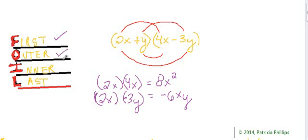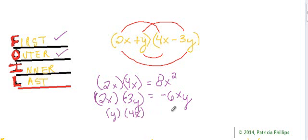Let's move on and do the inner terms. The inside of the whole thing gives us y and 4x. y times positive 4x equals 4xy.